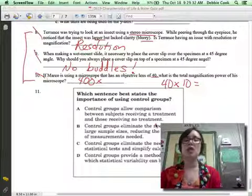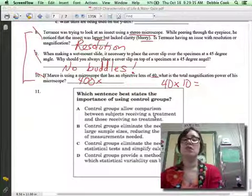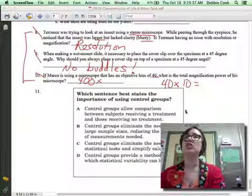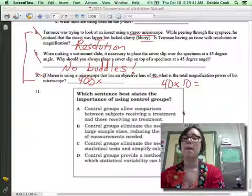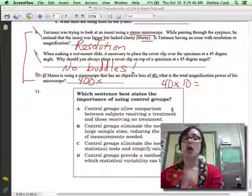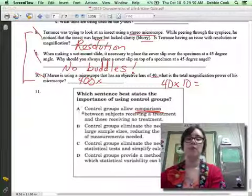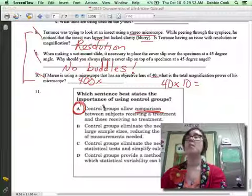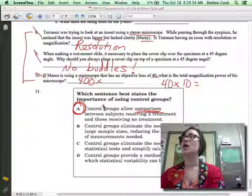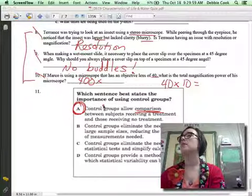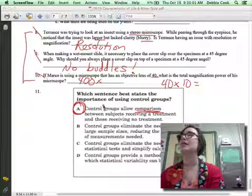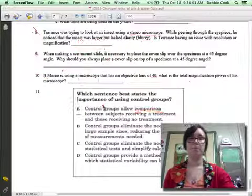Let's look at number 11. Which statement best states the importance of using a control group? Everybody should be able to answer this. What's the importance of a control group? What's the key? What word are you looking for? Comparison, right? We need it for comparison. So what should the answer be? It should be A. Anybody have any questions about the homework? If I were you, I would make sure that you have this homework handy, especially when it comes time to preparing for the midterm. I'm sure you'll see it again. Okay? Thank you.